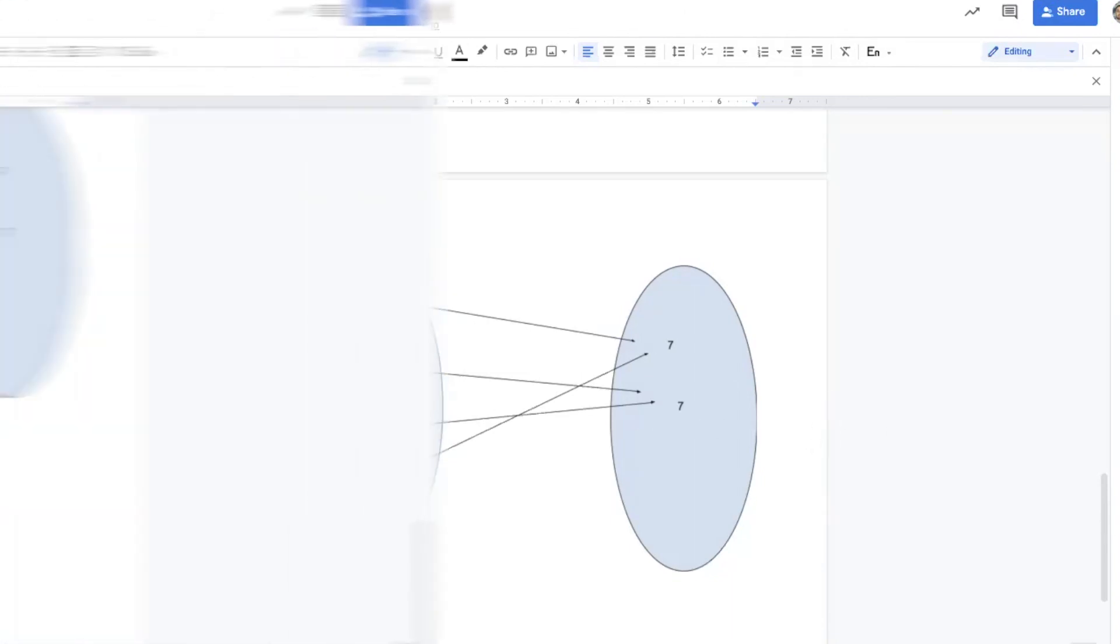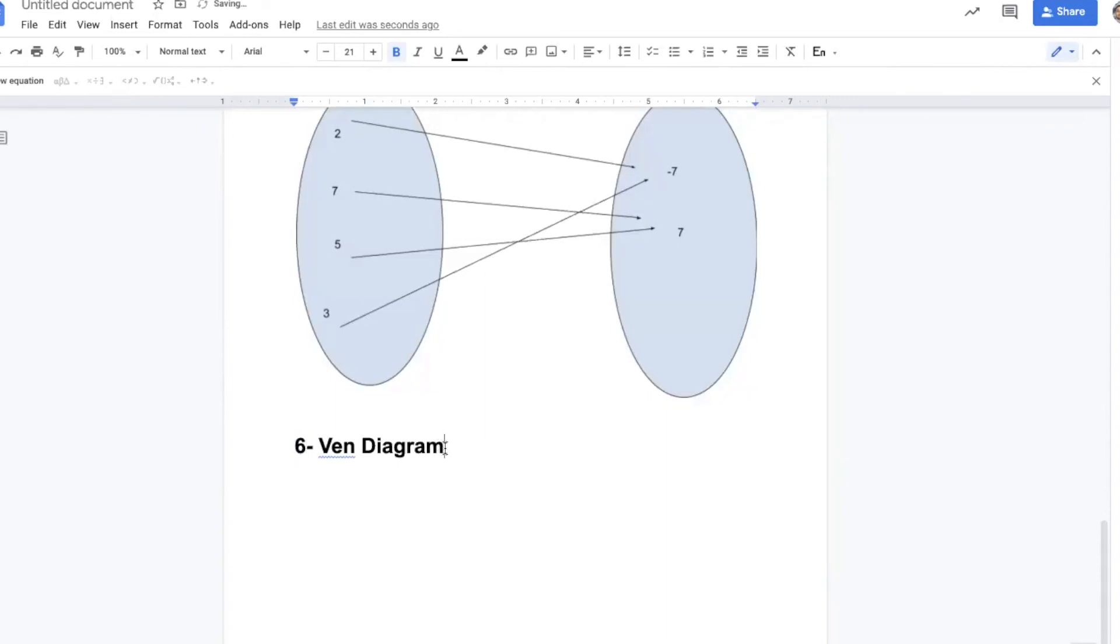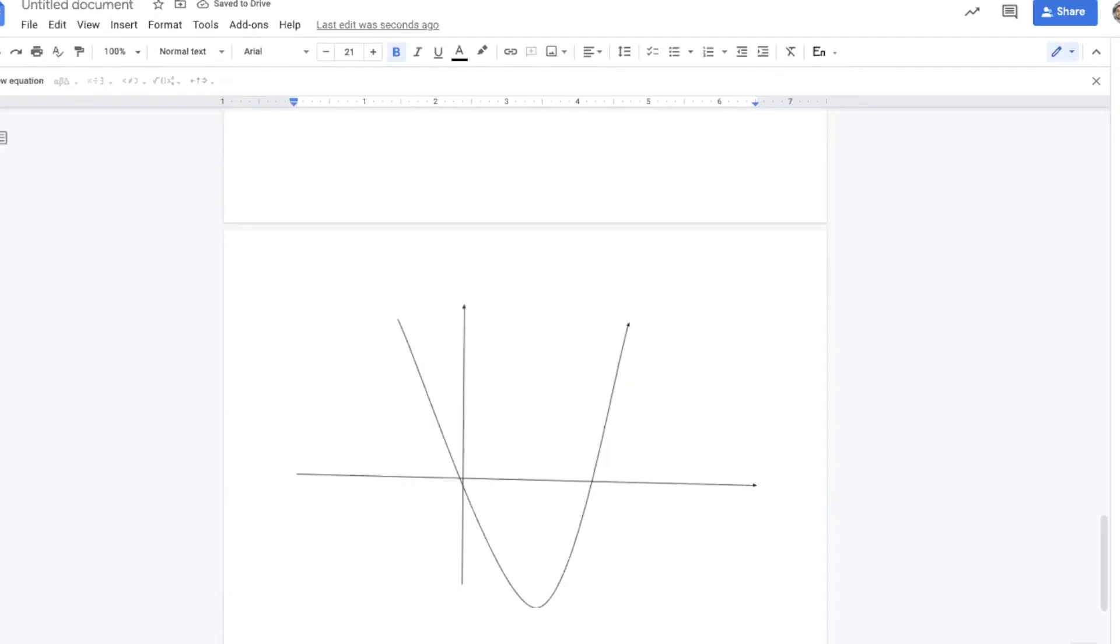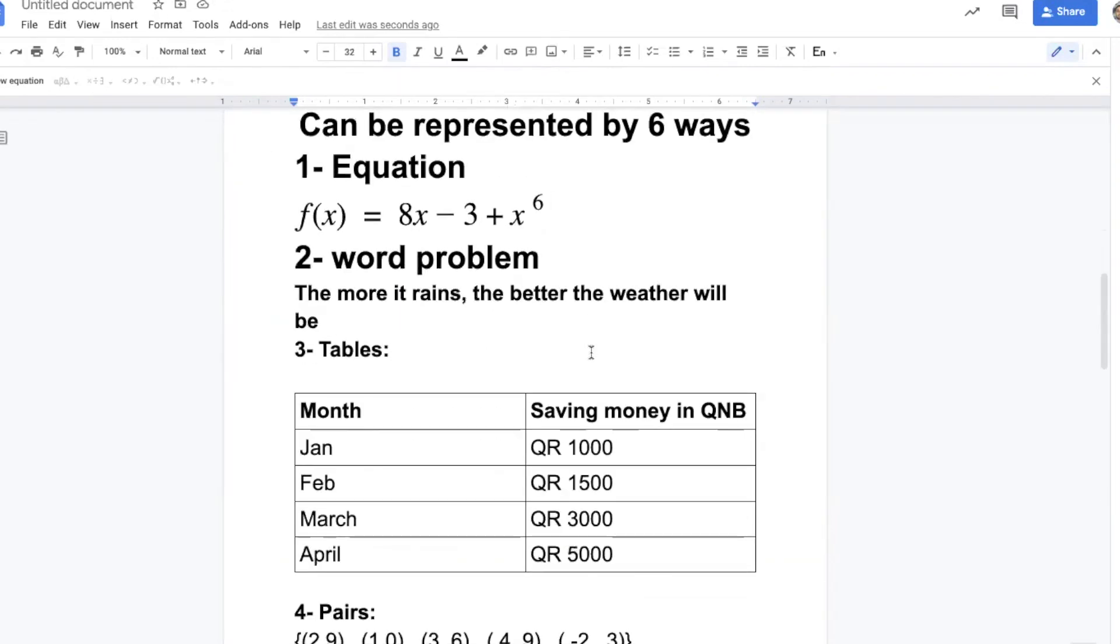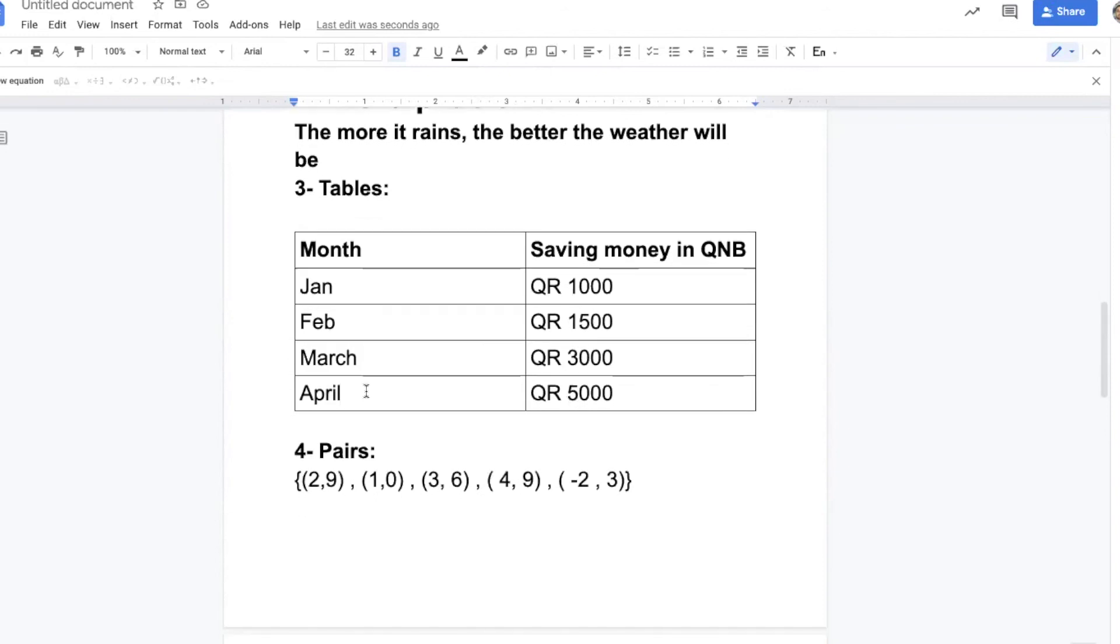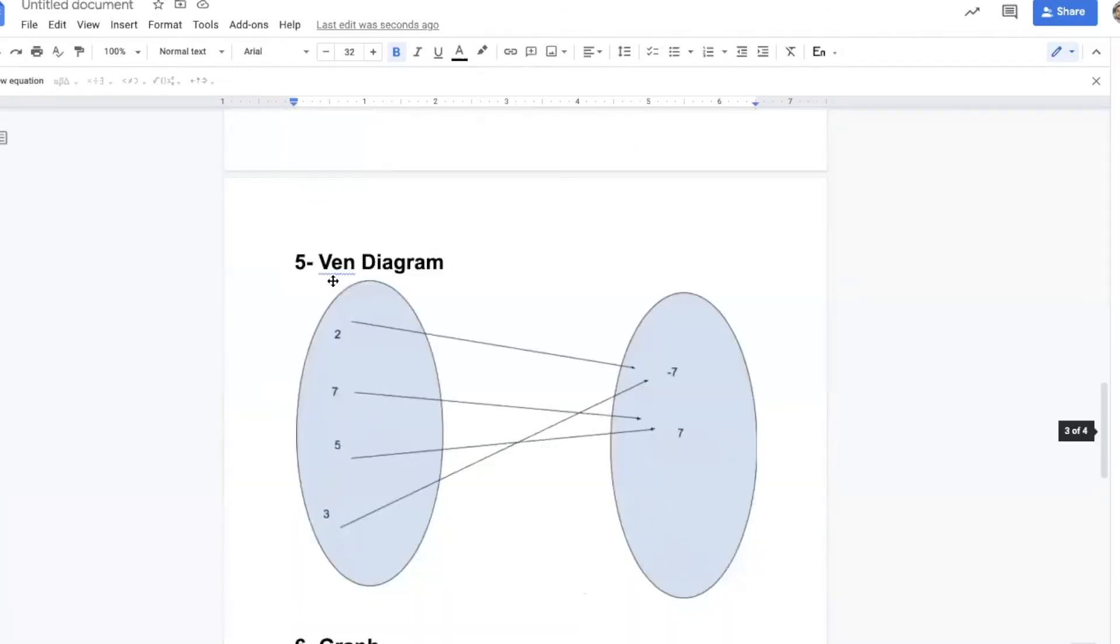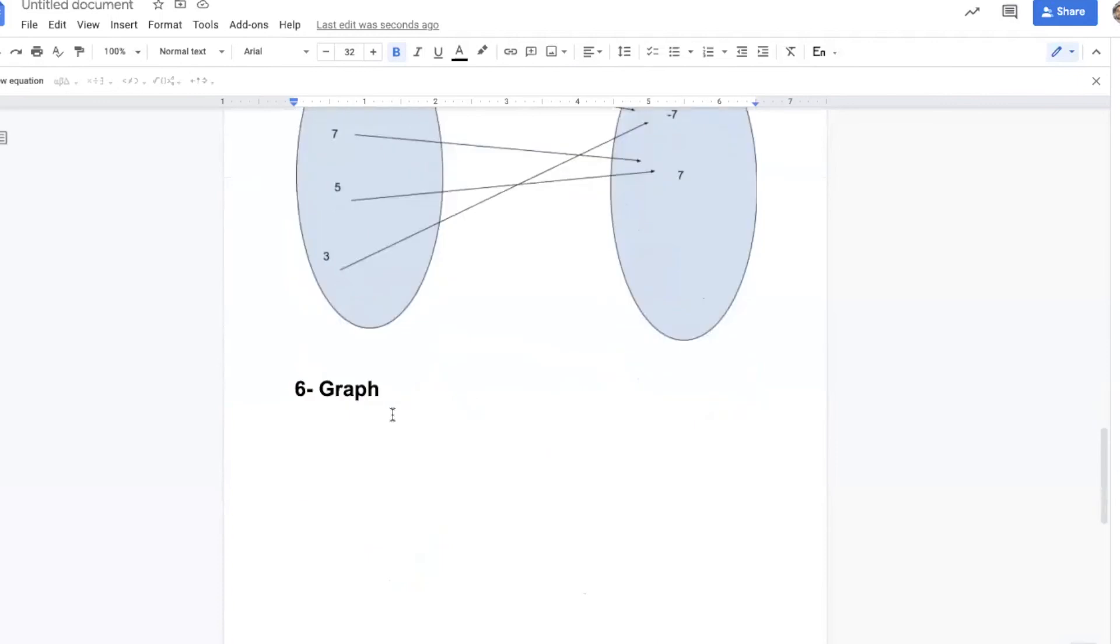Number six is called graph. So you know how many ways to represent a function? Six: equation, table, pairs, Venn diagram, and graph.